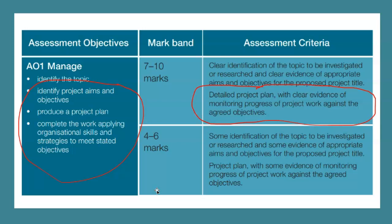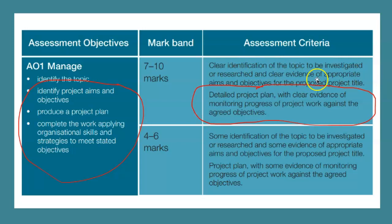The EPQ is a process-based qualification — it's different from coursework. You're not judged solely on the final product; it's all the work that goes on in the background. You're tasked with producing a detailed project plan with clear evidence of monitoring progress against agreed objectives. You need to show not only that you produced a project plan, but that you looked at it often and evaluated it. Many students will produce two or three different project plans as their objectives change.